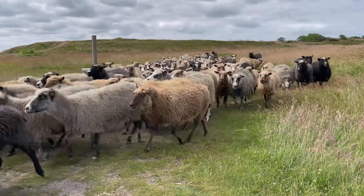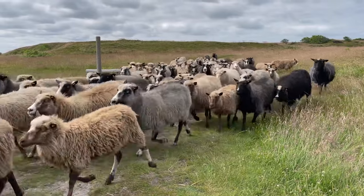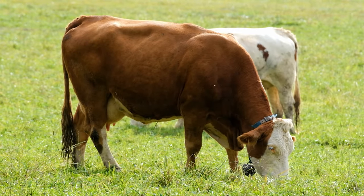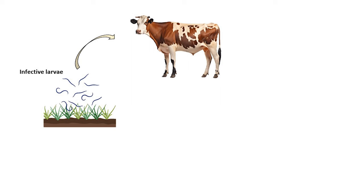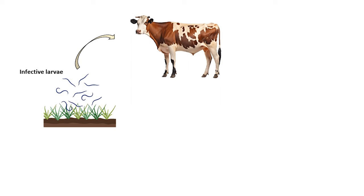Helminths, including nematodes or roundworms, are common parasites found in grazing animals, and their presence can impact the health and productivity of livestock. Grazing animals engulf the infective stage of nematodes, also known as larvae, from the pasture. Larvae can persist in humid conditions on the grass and in the soil, awaiting the main host animal. Once a grazing animal ingests contaminated vegetation, the infective larvae penetrate the host's gut wall and migrate to various organs and tissues.